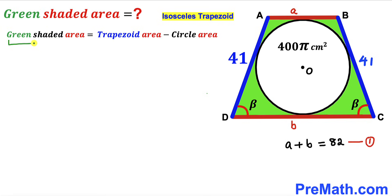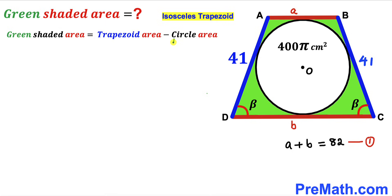The green shaded area equals the area of trapezoid ABCD minus the area of the inscribed circle. The circle area is given as 400π cm², so our only remaining task is to calculate the area of trapezoid ABCD.